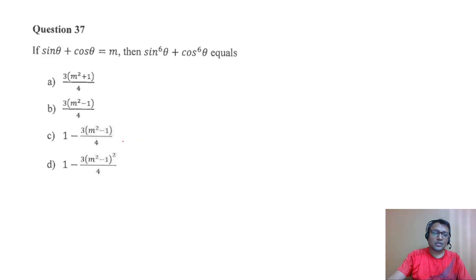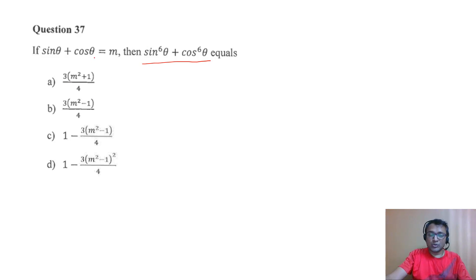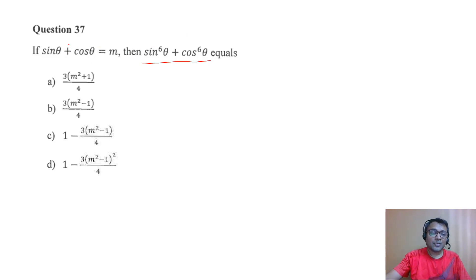Let's start solving the question. This is basically sin⁶θ + cos⁶θ. Now I'm a person who doesn't know too many formulas and not too much trigonometry — so how do I approach this? There may be a formula-based approach, but since I'm not aware of it, I'm trying to figure out how someone who's not great at trigonometry can solve this.